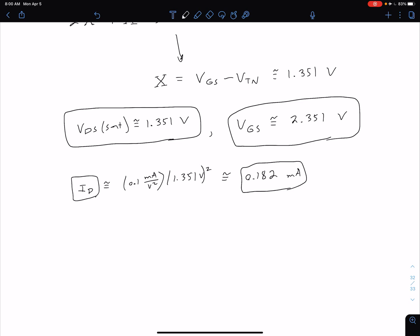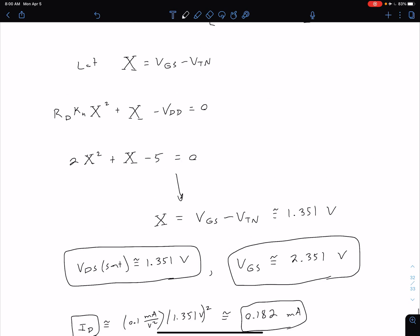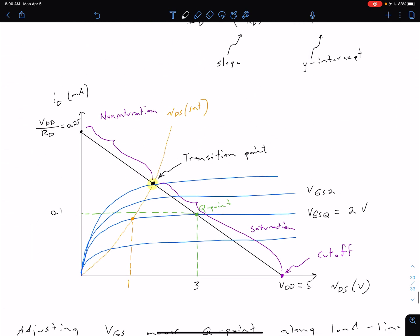If we go back to our load line, we could approximately see where these values are. This would be our VDS sat, the 1.351. Note that not everything is to scale. This would be our ID value of 0.182. Let me write these values here, 0.182, this would be our 1.351. And our transition point on that curve would correspond to the curve VGS of 2.351.